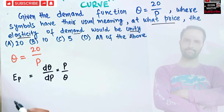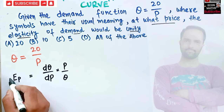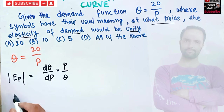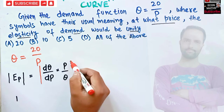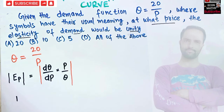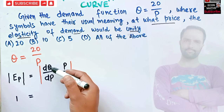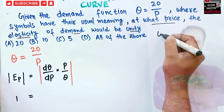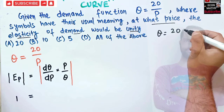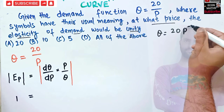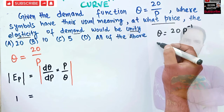Since elasticity of demand is unity, we take the absolute value and set it equal to one. Now we need to find dQ upon dP. Q is given as 20 upon P, so if we transpose P to the numerator it becomes 20 times P to the power minus one.